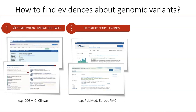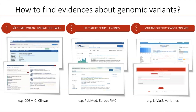But these common search engines are not appropriate to search for genetic variants, because genetic variants can be expressed in multiple forms, and so it's required to multiply the queries in order to gather an exhaustive set of documents about a given variant. A solution is then to use variant-specific search engines, such as LitVar and Variome, and in this video I am going to present Variome and show you the strengths of this system.